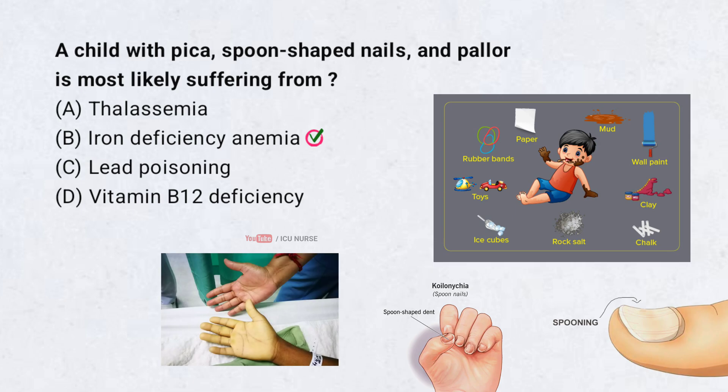Pica — that is, craving to eat non-food items like ice or dirt — develops due to iron depletion. Koilonychia, that is spoon-shaped nails, occurs from nail bed changes in chronic deficiency. Pallor reflects low hemoglobin levels. Iron deficiency is confirmed by low serum ferritin, microcytic anemia on CBC, and response to iron supplementation.